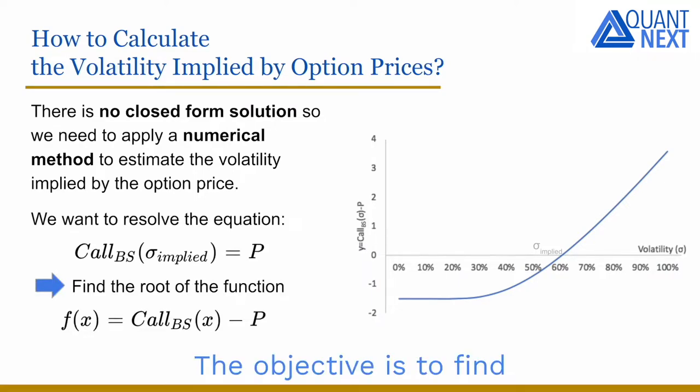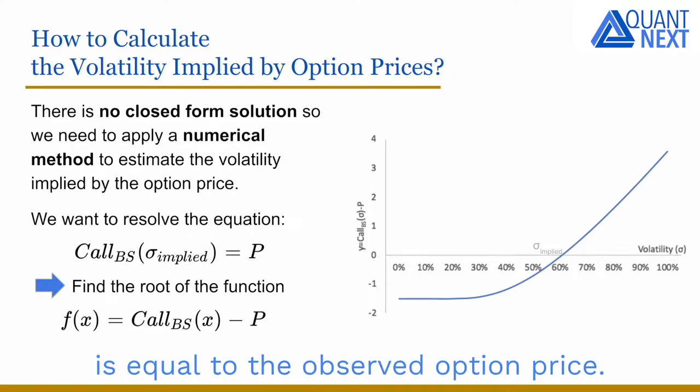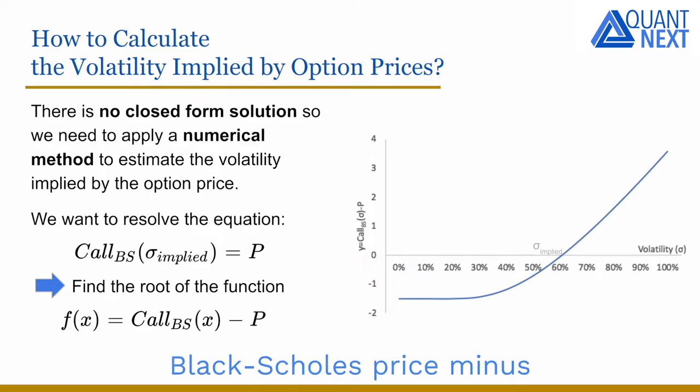The objective is to find the volatility level so that the Black-Scholes price is equal to the observed option price. So we want to find the root of the function Black-Scholes price minus observed price.